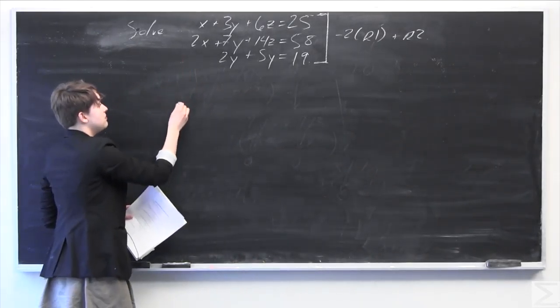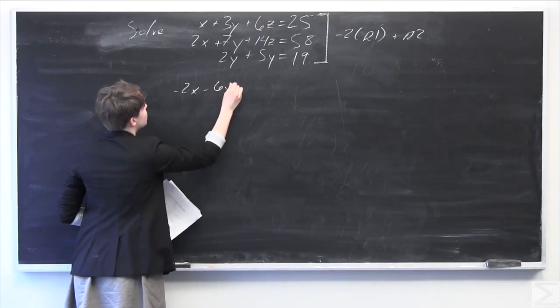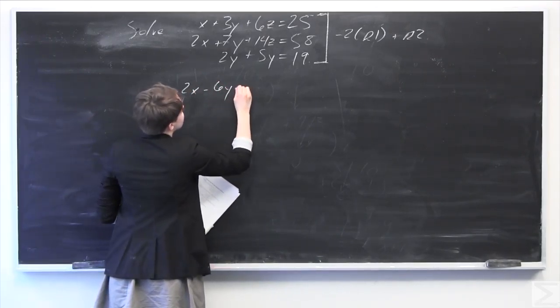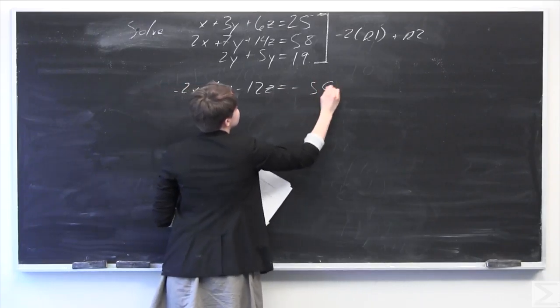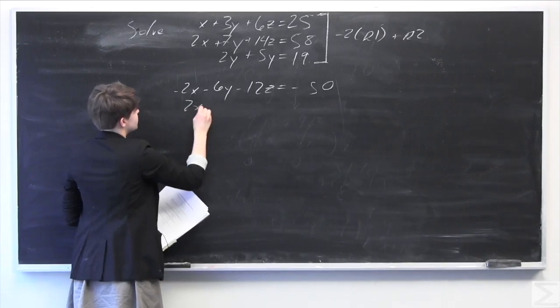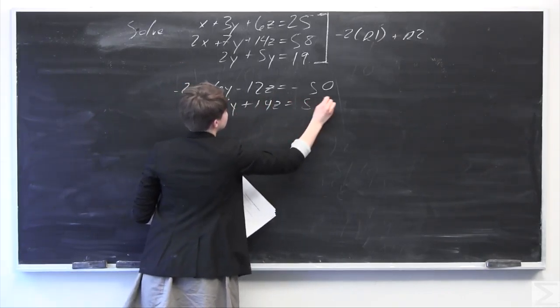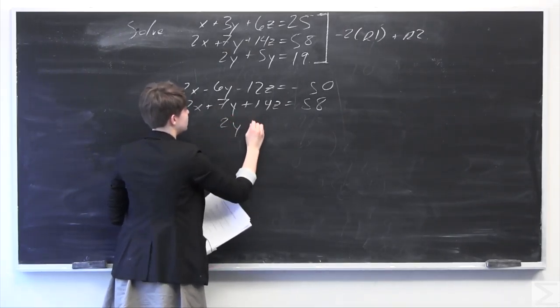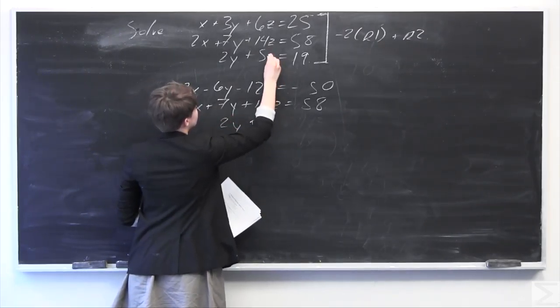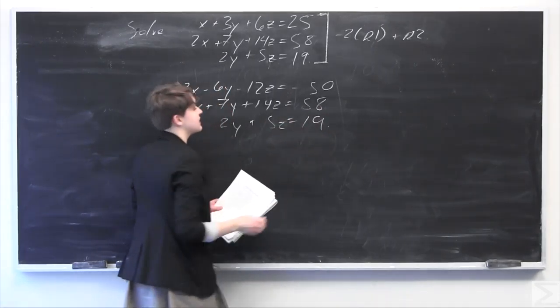Negative 2 times row 1 gives us negative 2x minus 6y minus 12z equals negative 50. The second row is 2x plus 7y plus 14z equals 58. And the last row stays the same: 2y plus 5z equals 19.